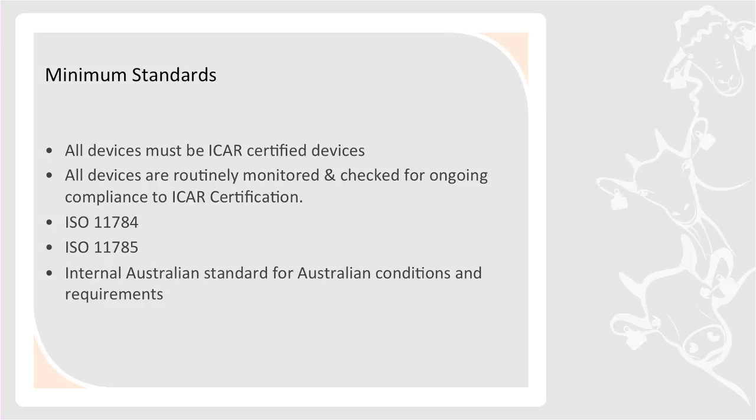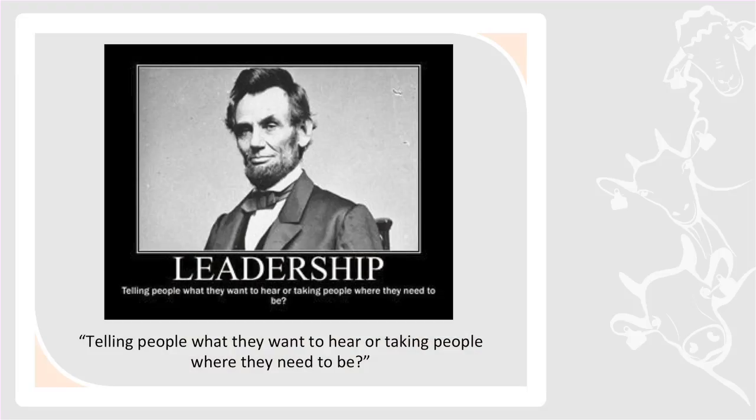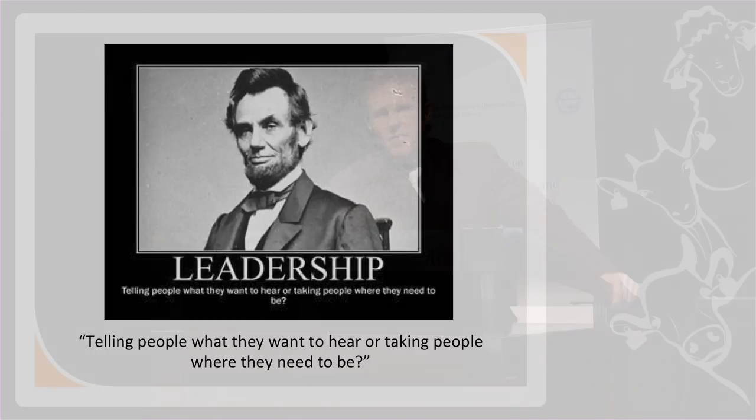You need to set minimum standards and stick to them — this discussion we've had today has been excellent. Appropriate equipment is also essential. There's nothing worse than seeing someone take a small wand reader into a saleyard and wonder why their arm got broken. Use equipment appropriate to the environment you're reading in, and talk to the reader manufacturers — they want to ensure the readers you're using suit your situation. You also need leadership. So many times we can move and bend to what people think they want, but where they need to be is not necessarily where they want to be.